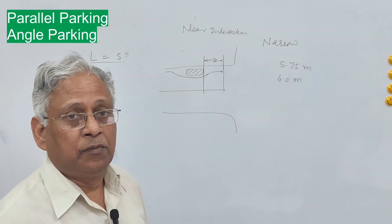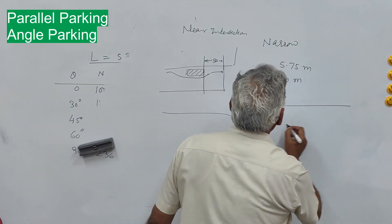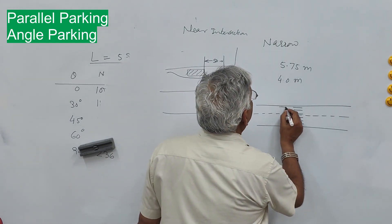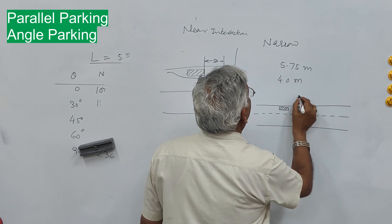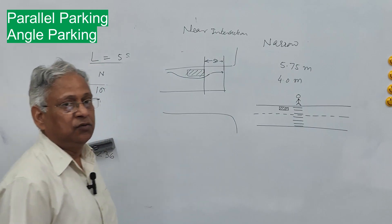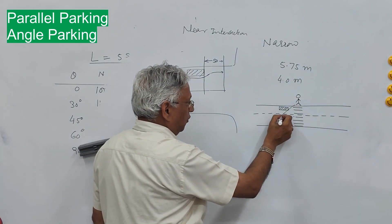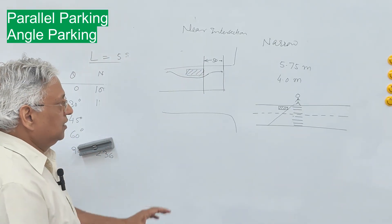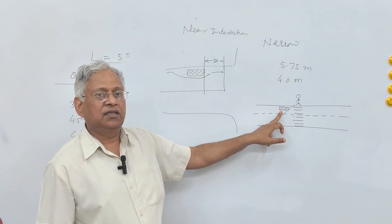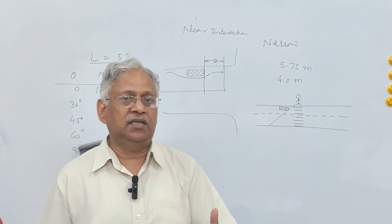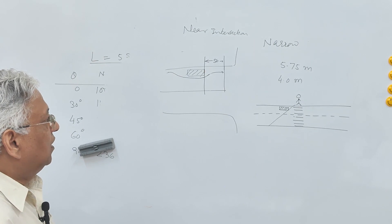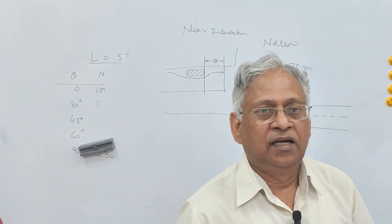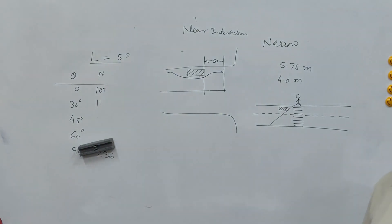The third restricted location is pedestrian crossings. If a vehicle is parked near a mid-block pedestrian crossing, it obstructs the view of the pedestrian waiting to cross, compromising their safety. Therefore, a parked vehicle should not be closer than 8 meter from a pedestrian crossing. Finally, on-street parking should not be permitted on structures like bridges, tunnels, flyovers, and underpasses, as they are already narrow and parking would make movement unsafe.